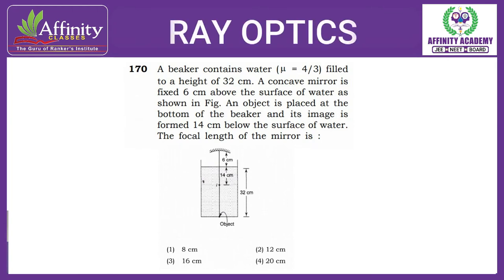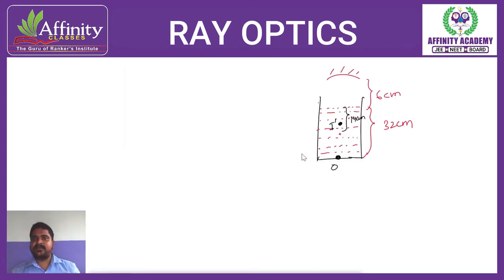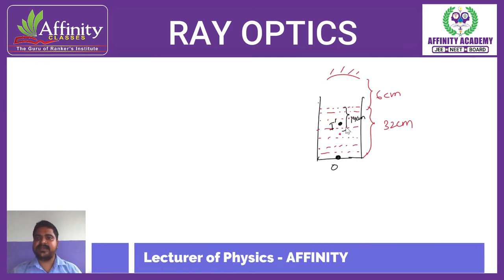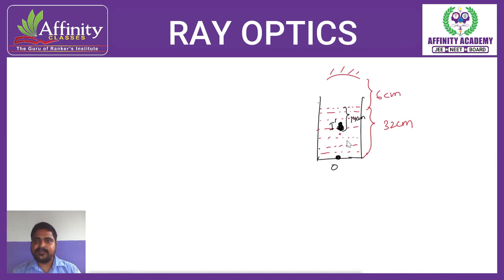The beaker contains water with mu equal to 4/3, filled to a height of 32 centimeters. A concave mirror is fixed 6 centimeters above the surface of the water, as shown in the figure. An object is placed at the bottom of the beaker and its image is formed 14 centimeters below the surface of the water. We need to find the focal length of the mirror.